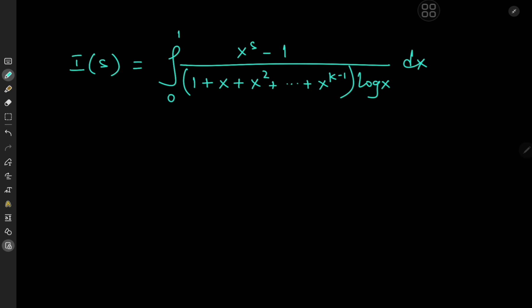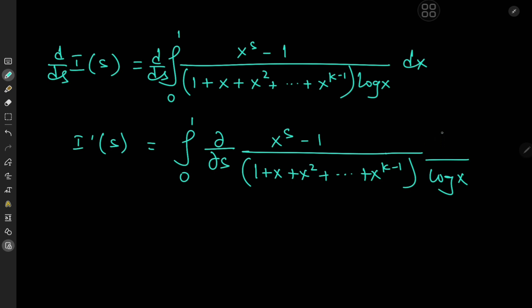First up, notice that we have this pesky log x term in the denominator, but we have a perfect strategy for getting rid of that. We could just differentiate under the integral sign with respect to the parameter. So taking the derivative with respect to s gives me the derivative of I with respect to s on the left-hand side. Now I'm switching up the order of the operators.